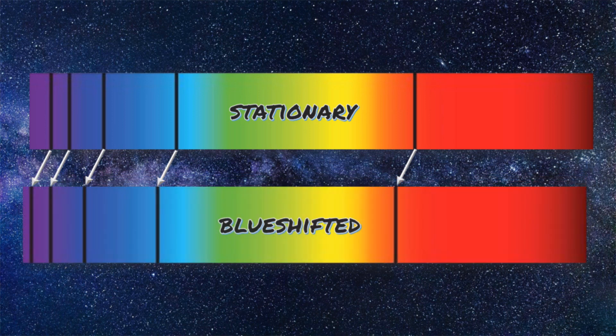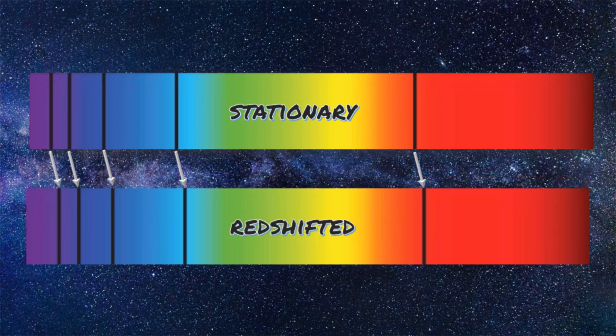Lastly, spectroscopy can tell us about the motion of a body. If an object is moving towards us, its wavelength decreases, so its light gets blue shifted. And if an object is moving away from us, its wavelength increases, so its light gets red shifted.